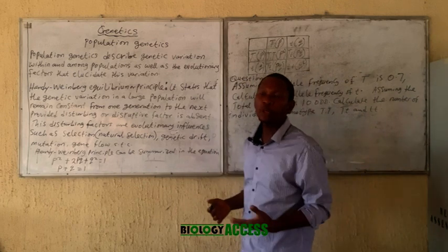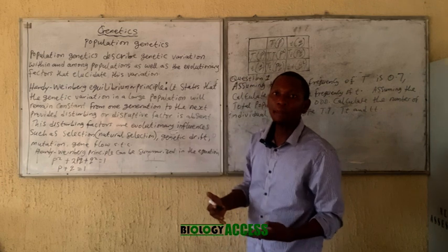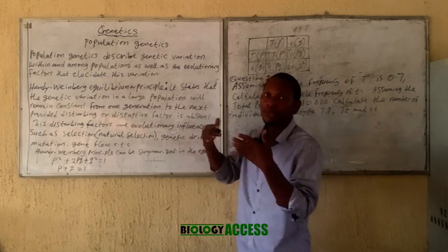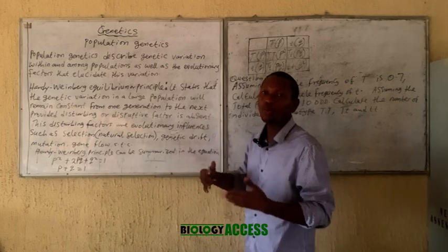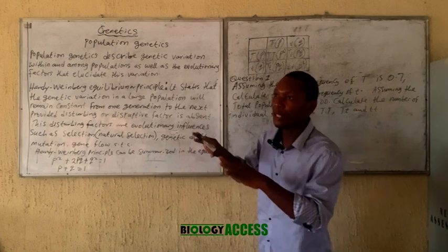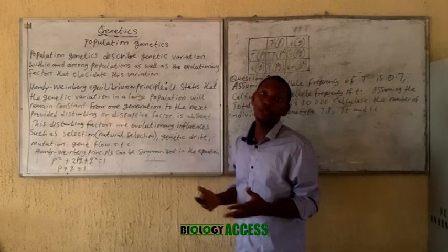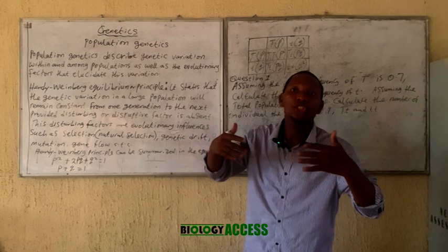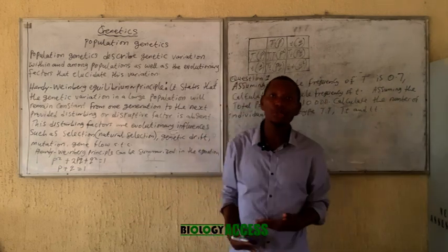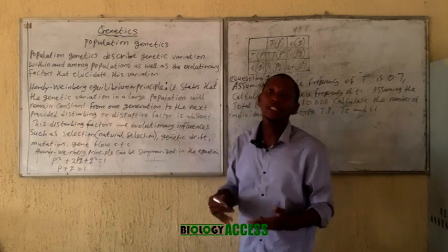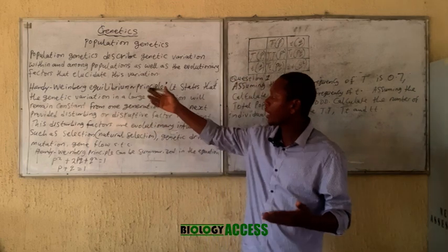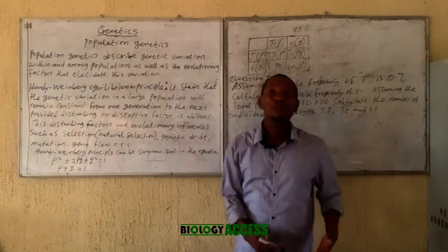When we talk about genetic variation within a population, we are talking about genotype frequency as well as allele frequency. These are some of the things that vary within a population. If the genotype frequency as well as the allele frequency in a population remain constant from one generation to the next, the population is said to be at Hardy-Weinberg equilibrium.